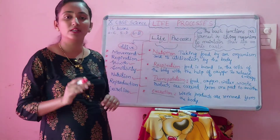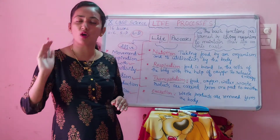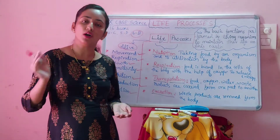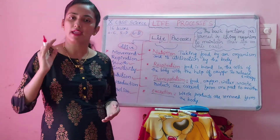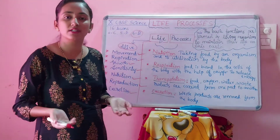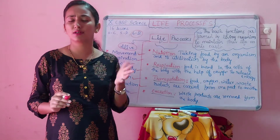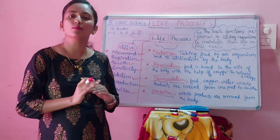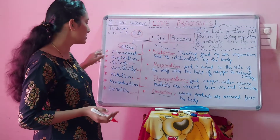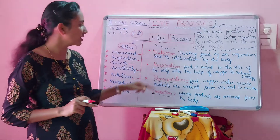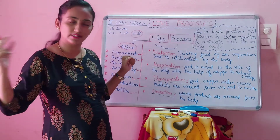Next we will go to reproduction. It is another great property of a living organism — they give birth to their young ones, otherwise called offspring. The mode of reproduction will be different, but all living organisms have the capacity to give birth to their young ones — including plants and all animals. Next is excretion. Excretion is the process of removing waste material from the body. Animals, insects, microorganisms, birds, and plants all remove waste material from their bodies. This process is called excretion. All these processes take place only in living organisms.